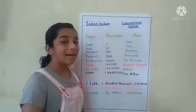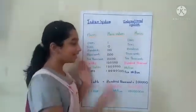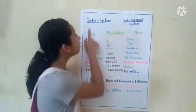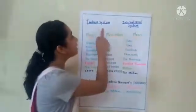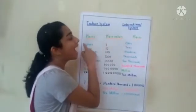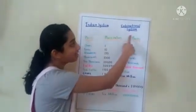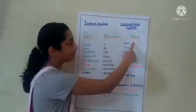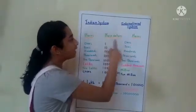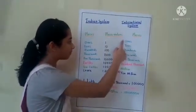Now let us compare both the systems using this chart. Here we have the Indian Number System places, the International Number System places, and the place values.